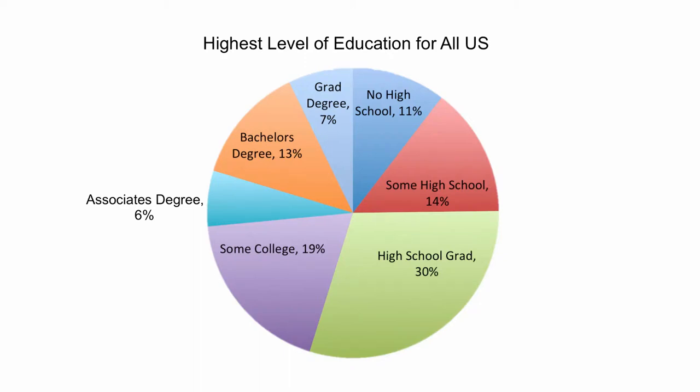Pie charts are also a common choice for data visualization. They're especially good if you want to emphasize the proportions of people in each category. There are, however, two important qualifications for using pie charts. First, they work best if you have only a few categories, or at least a few large ones.